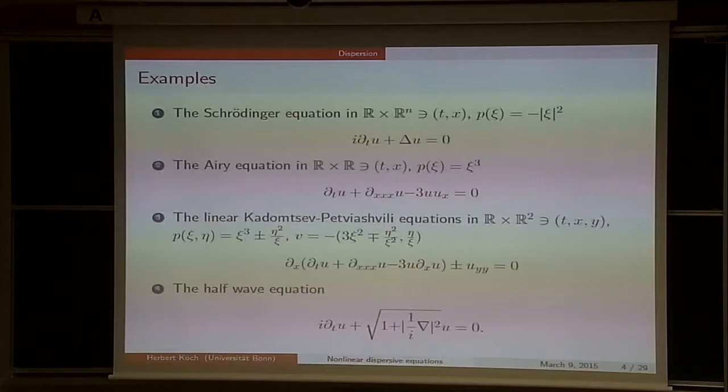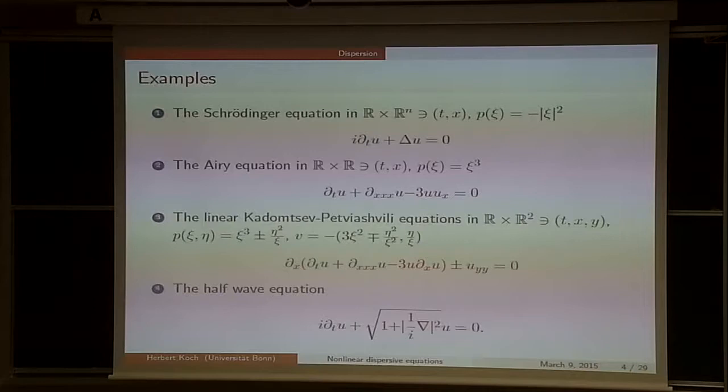The wave equation fits into this framework, but it is different since the wave equation is second order in time. If you formally factorize it into two equations, you get a half-wave equation. On the level of symbols it looks like tau equals plus or minus |xi|, and you get a Fourier multiplier.